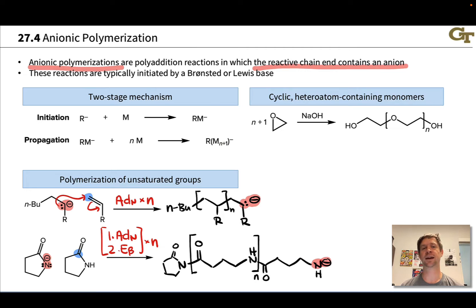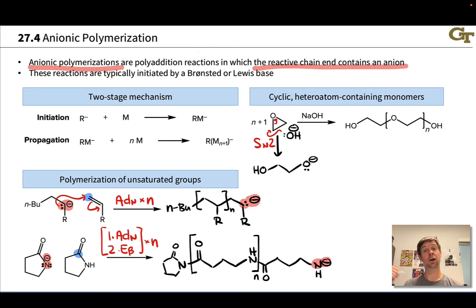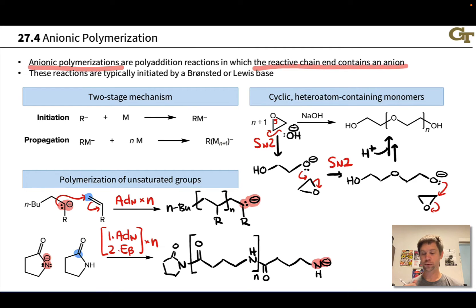These kinds of ring-opening polymerizations under anionic conditions are commonly used. It's a convenient way to package the monomer in a cyclic form and only open it when polymerization occurs. Epoxides are also susceptible to anionic polymerization. Rather than having a cationic intermediate with an electrophilic carbon on the chain end, we have an anion — the O- — that can add to another molecule of epoxide. This happens repeatedly through SN2 steps, creating O- over and over again after initiation by, for example, hydroxide. The result is a polyether, and at some point protons are added to neutralize the chain end and give the neutral polymer product.